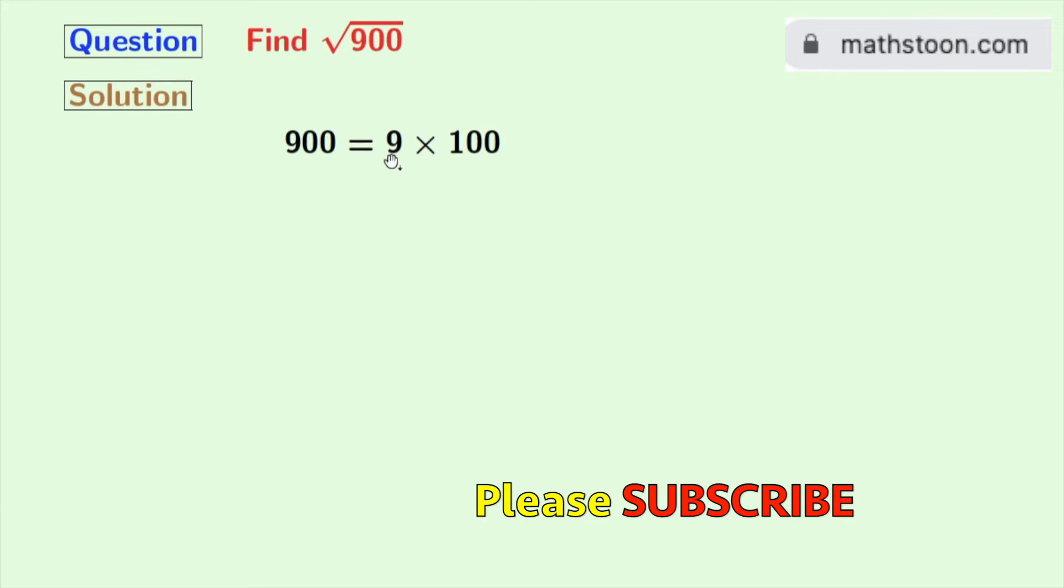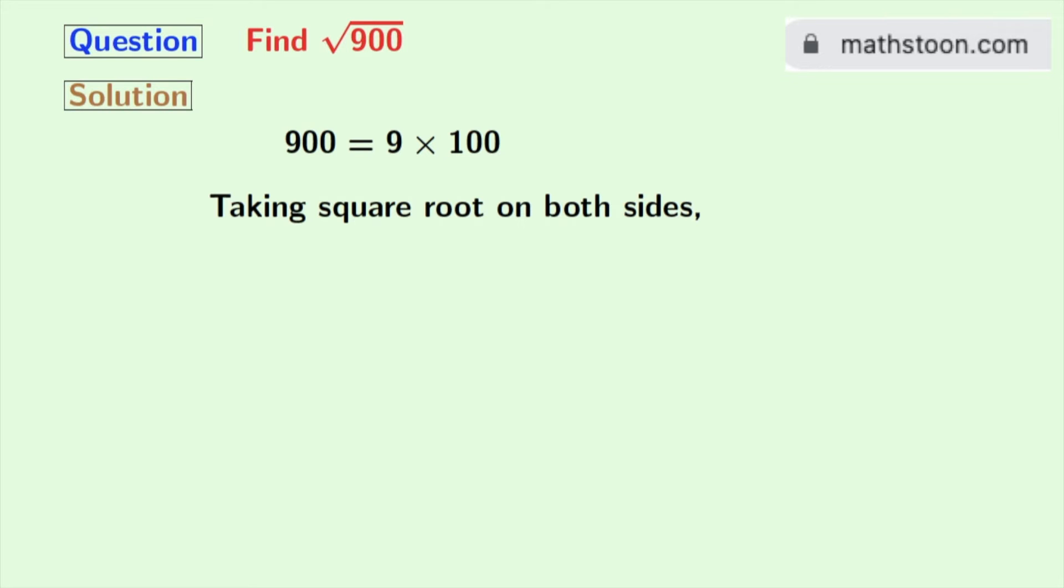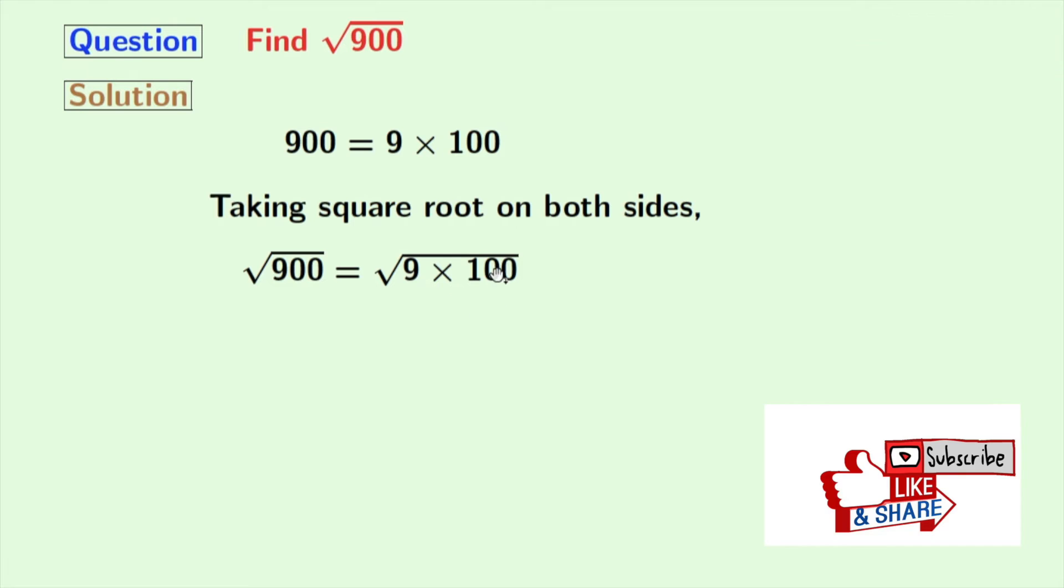See that here 9 and 100 both are perfect squares which are squares of 3 and 10 respectively. Now we will take square root on both sides. Doing so, we get square root of 900 is equal to square root of 9 times 100.